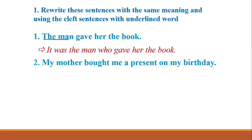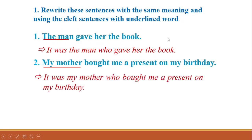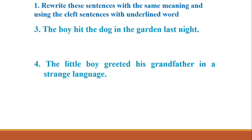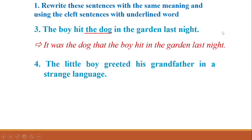Number two: the underlined word is 'My mother,' also a subject. The verb 'bought' is past tense, so we write: 'It was my mother who bought me a present on my birthday.' Similarly, number three has 'The dog' — it was the dog that the boy hid in the garden.